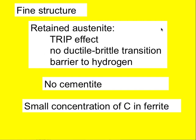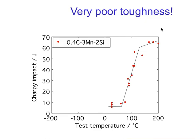So let's look at the properties — and when we look at the toughness it is actually a disaster. The ductile-brittle transition temperature is way above room temperature. There is no way this is any good, and there is something wrong with our ideas about this ideal structure.